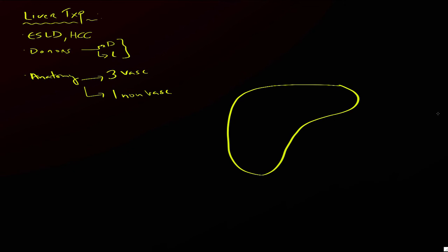Here we have a transplanted liver, and I'll draw in some of the anatomy associated with it. In purple, I'm going to draw the donor's portal vein. In red, I'm going to draw the donor's hepatic artery. In blue, I'm going to draw the IVC that comes with the donor — the infrahepatic IVC and the suprahepatic IVC. These three constitute the vascular anastomoses. The one non-vascular anastomosis is made from the patient's biliary tree — the bile duct.